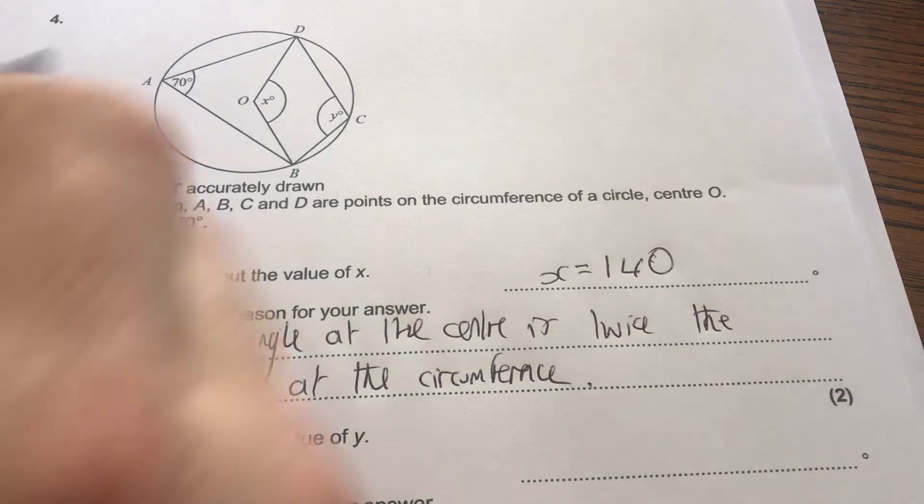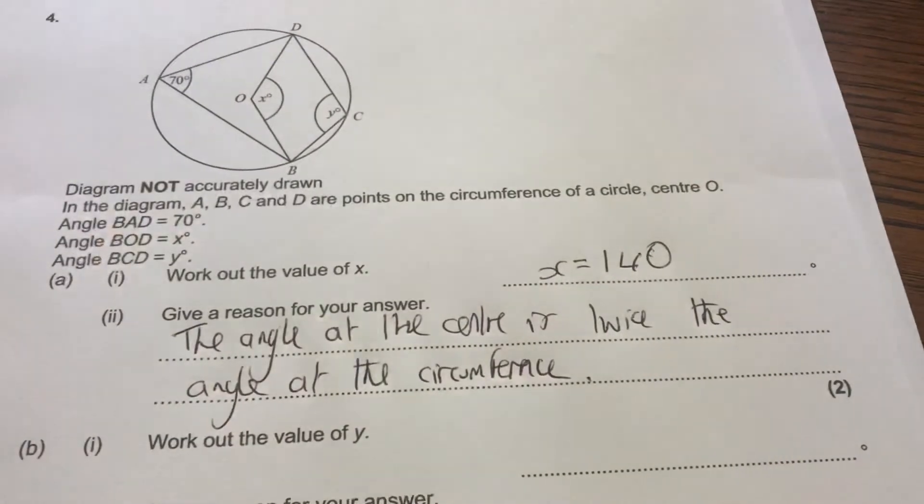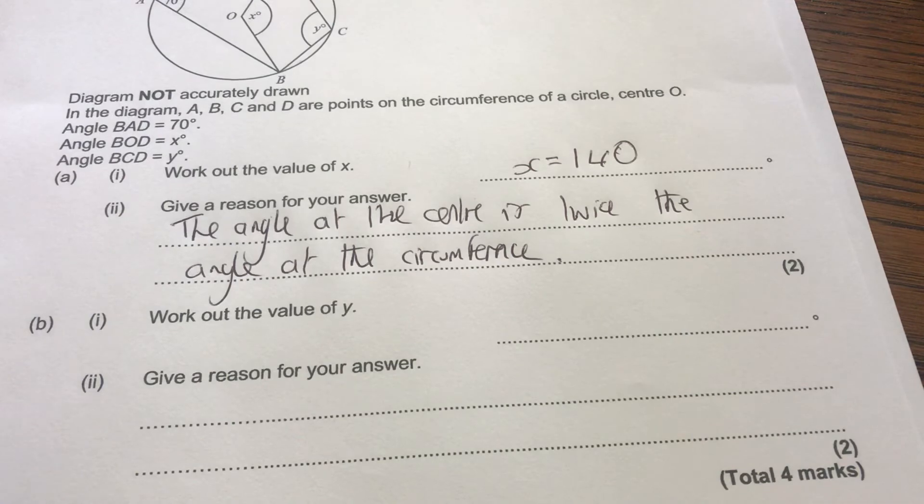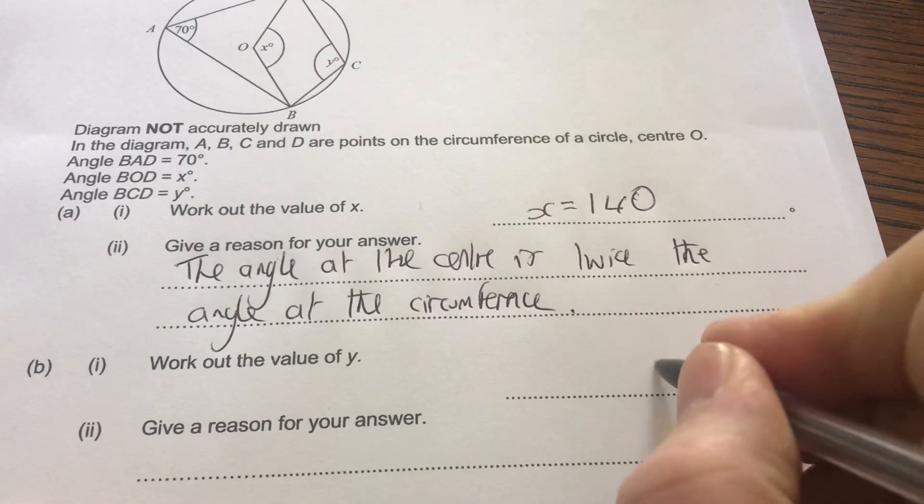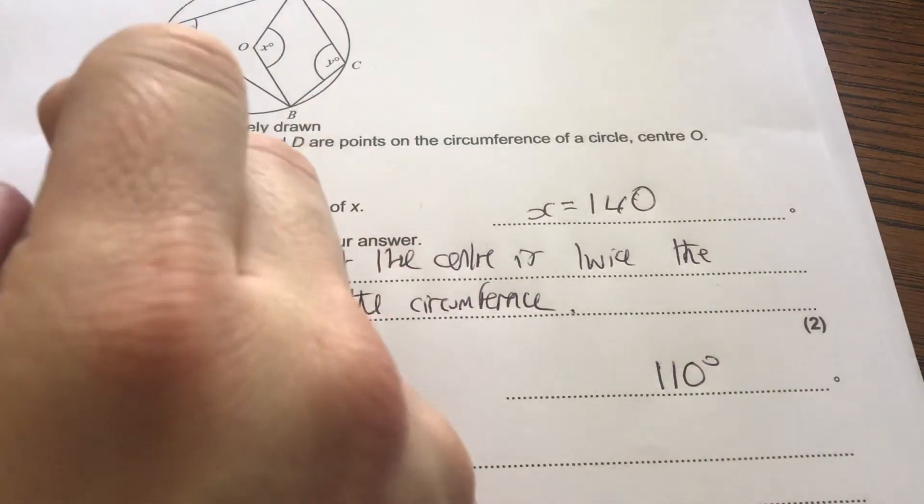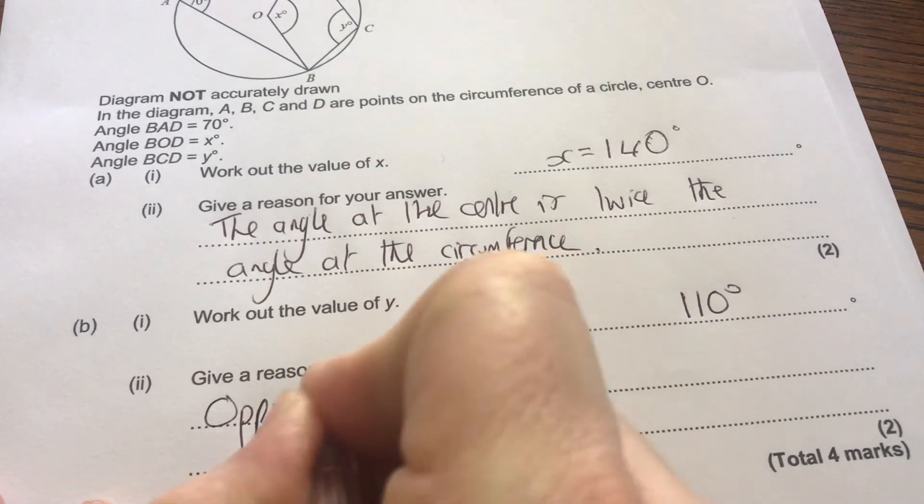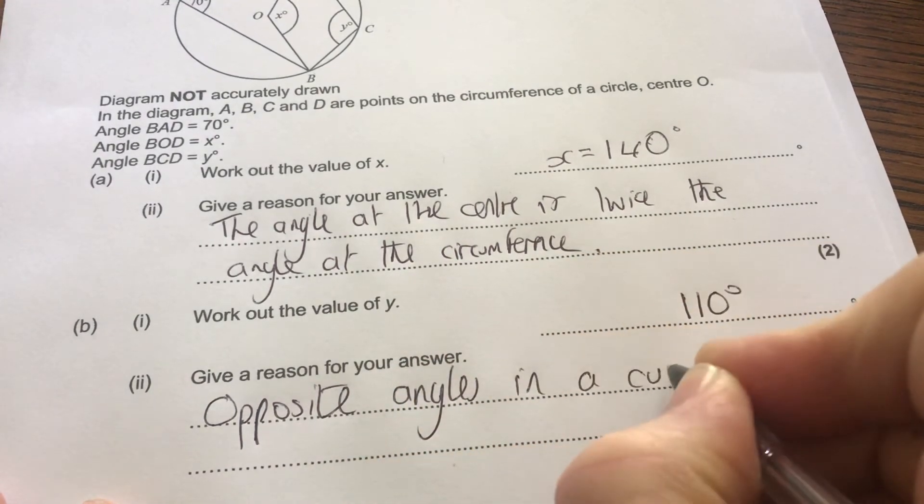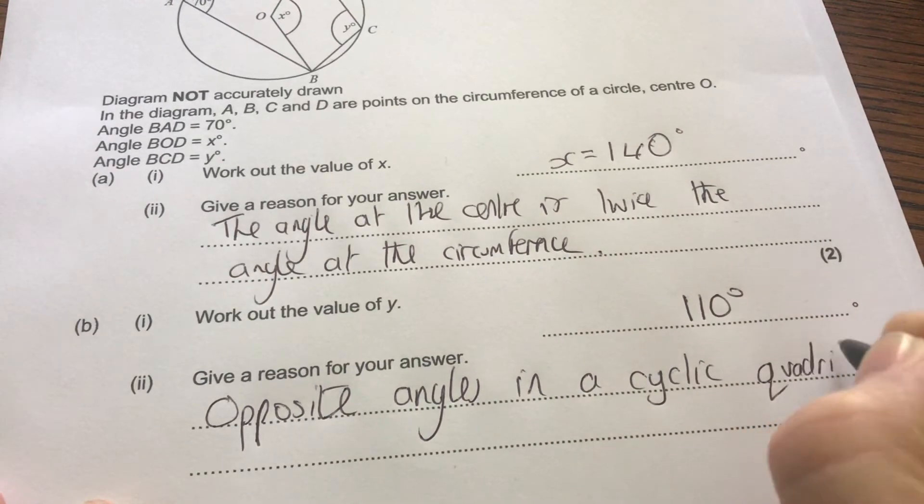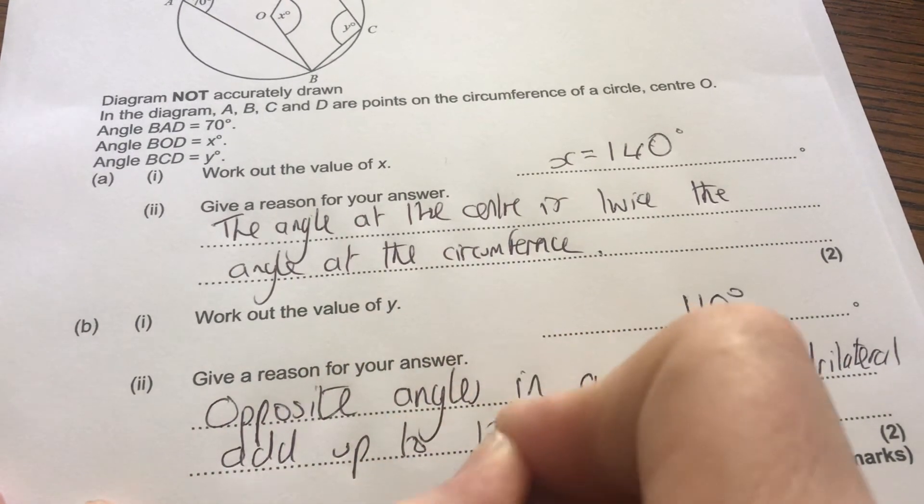Well, what about y? Well, look on the outside. You've got that nice cyclic quadrilateral. Opposite angles in the cyclic quadrilateral add up to 180, of course. It's one of your key rules, spotting those rules, being able to use them. That's what's been assessed here. So y is 110. 110 and 70 gives you 180. And just quote the rule, which I'm sure you've learnt from your lessons. Opposite angles in a cyclic quadrilateral add up to 180 degrees.